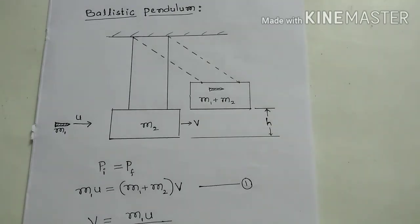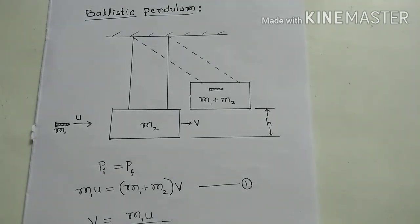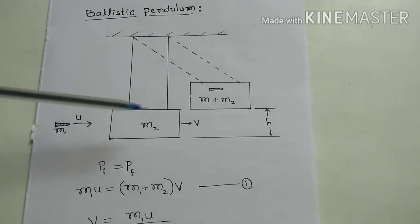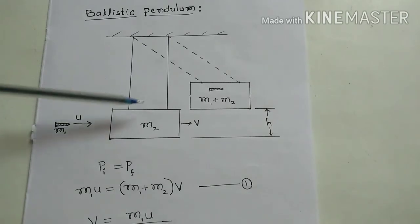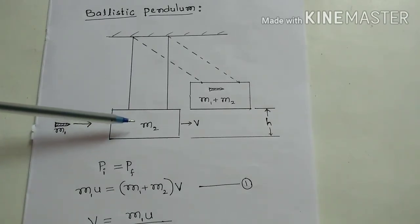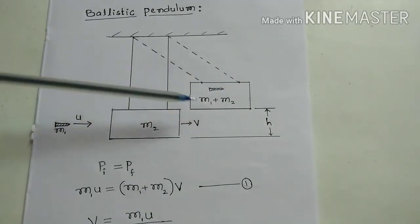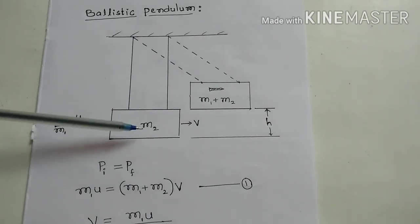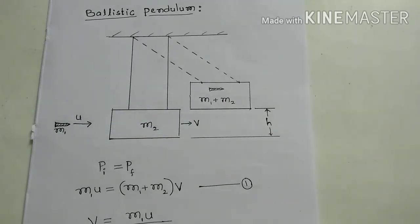If you have a gun and you want to find out with what velocity the bullet is coming out from your gun, you will know if you watch this video properly. Here, the bullet of mass m1 is fired and coming out with velocity u. It goes and pierces into block m2. After piercing into m2, both m1 and m2 move together with velocity v immediately after collision. This is a completely purely inelastic collision.